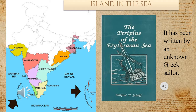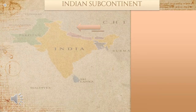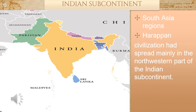The location of these islands may have been important in ancient Indian trade. The manuscript known as the Periplus of the Erythraean Sea, or the Handbook of the Red Sea, makes mention of Indian islands, and was written by an unknown Greek sailor. The cities of Harappa and Mohenjo-Daro are in today's Pakistan. Afghanistan, Pakistan, Nepal, Bhutan, Bangladesh, Sri Lanka, Maldives and India together form the region known as South Asia. Considering the expanse and significance of India in this region, it is also known as the Indian subcontinent. The Harappan civilization had spread mainly in the northwestern part of the Indian subcontinent.